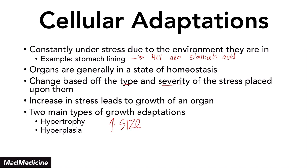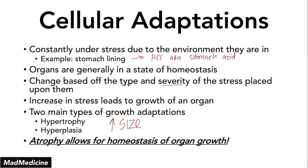Now what happens if we take away the stress? Does the organ or tissue need to stay really big — stay in this hypertrophic or hyperplastic state in order to adapt to nothing? No. It's going to go backwards and essentially undo everything, and that's going to be by a mechanism called atrophy. This is why we say our organs are under a state of homeostasis: when stress is placed upon an organ they undergo hypertrophy and hyperplasia, and when you take the stress away, atrophy is the main mechanism to return to a normal state.